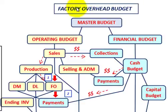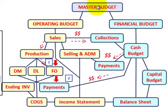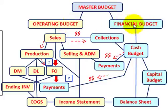What we're going to be going over here is the factory overhead budget, and we'll go through an example on how we calculate this. We start with our master budget, which includes our operating budget and our financial budget. The factory overhead budget falls under our operating budget.